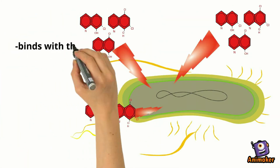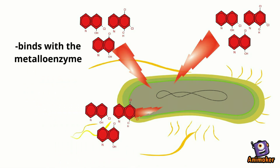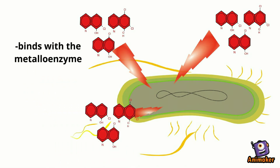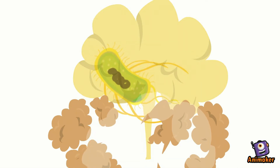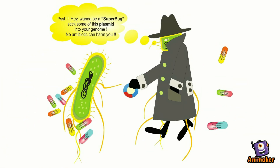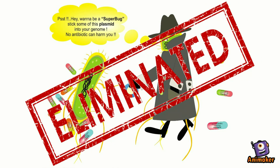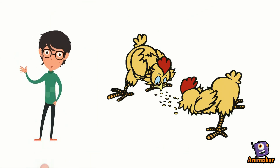Halquinol has a very unique mode of action. It binds with metalloenzymes that are responsible for respiration in the organism. When an essential function like respiration is interrupted, the bacteria cannot survive and are thus eliminated. This method of action limits almost completely the development of resistance through plasmid mediation, and hence there is no resistance when you use Halquinol, even if used regularly.